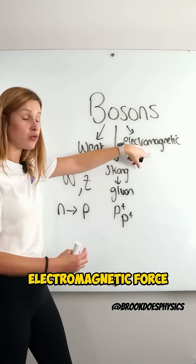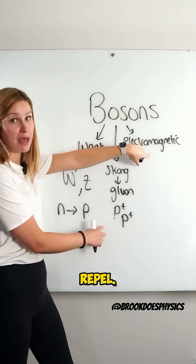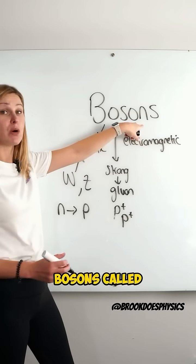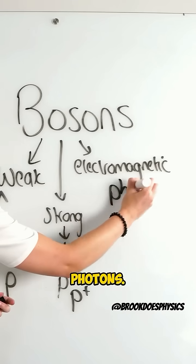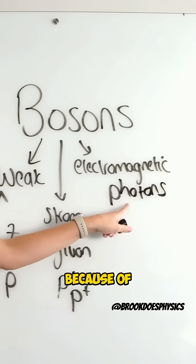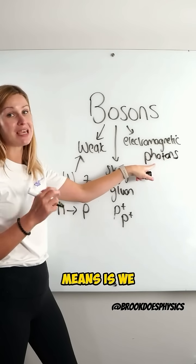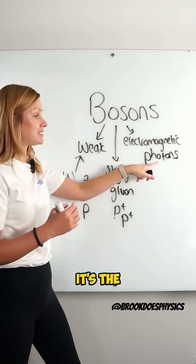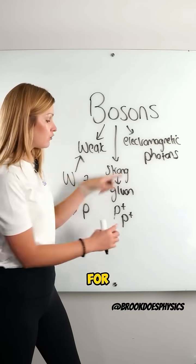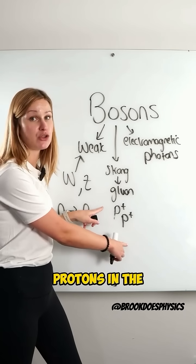The electromagnetic force is what causes the protons to want to repel each other. It's mediated by bosons called photons — specifically the virtual photon. We can't actually detect it yet, but it's the exchange particle responsible for the repulsion between the two protons in the nucleus.